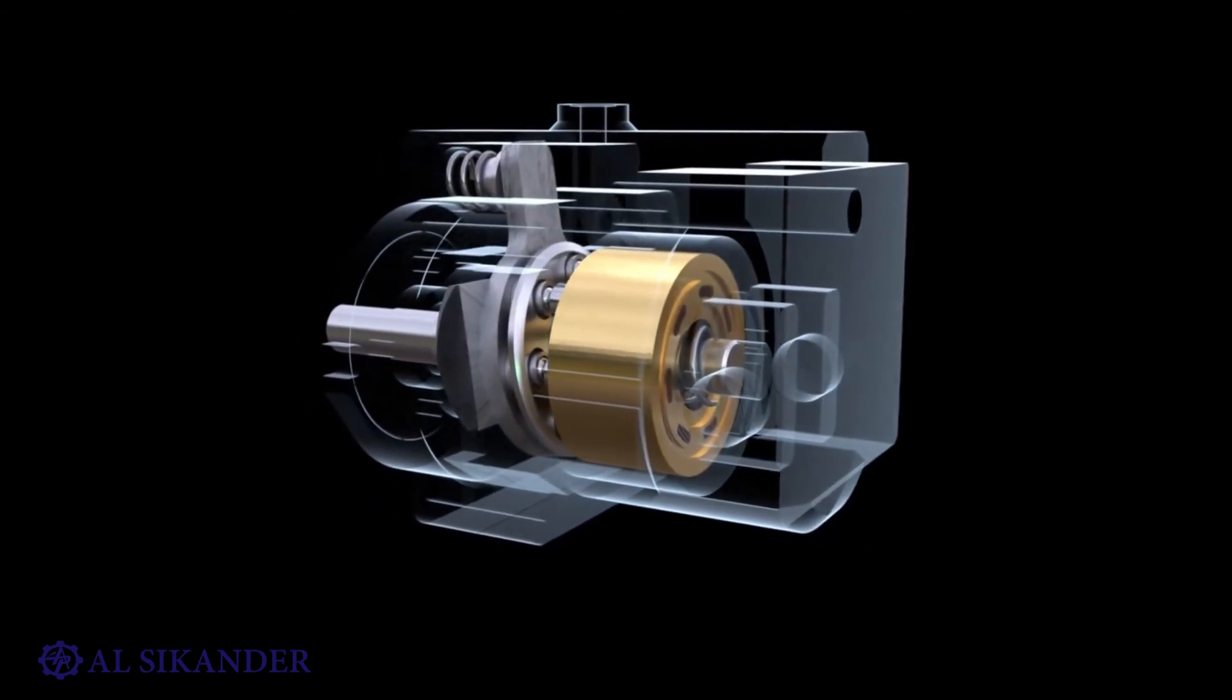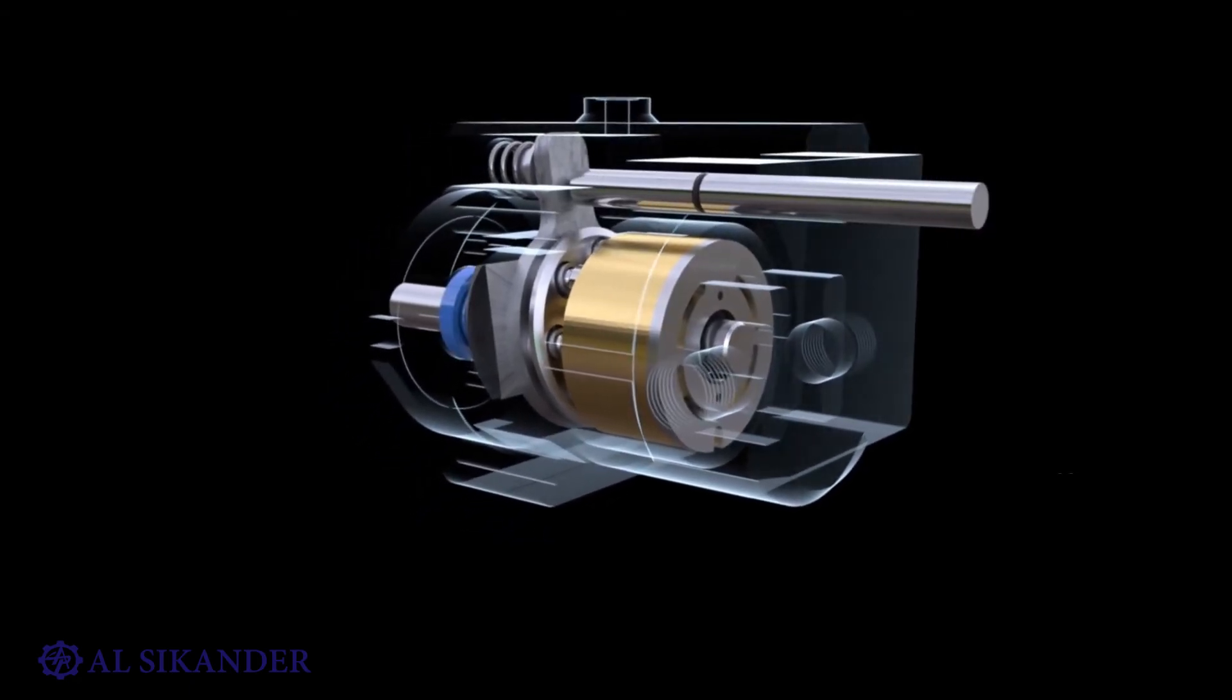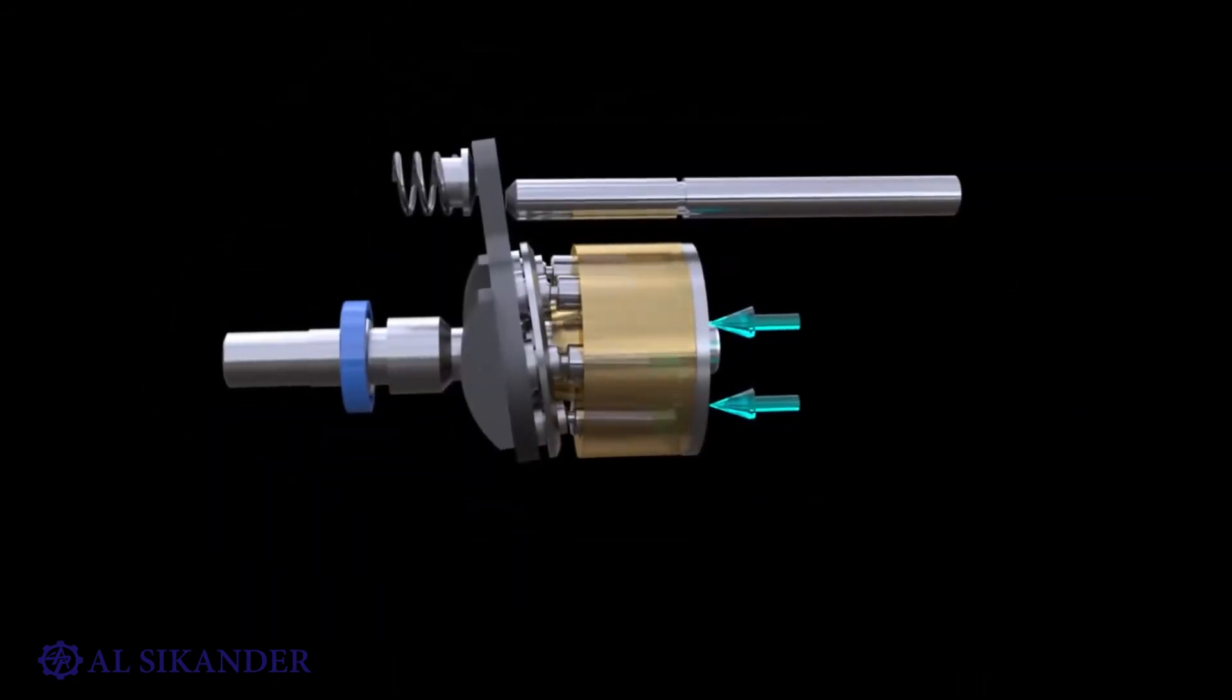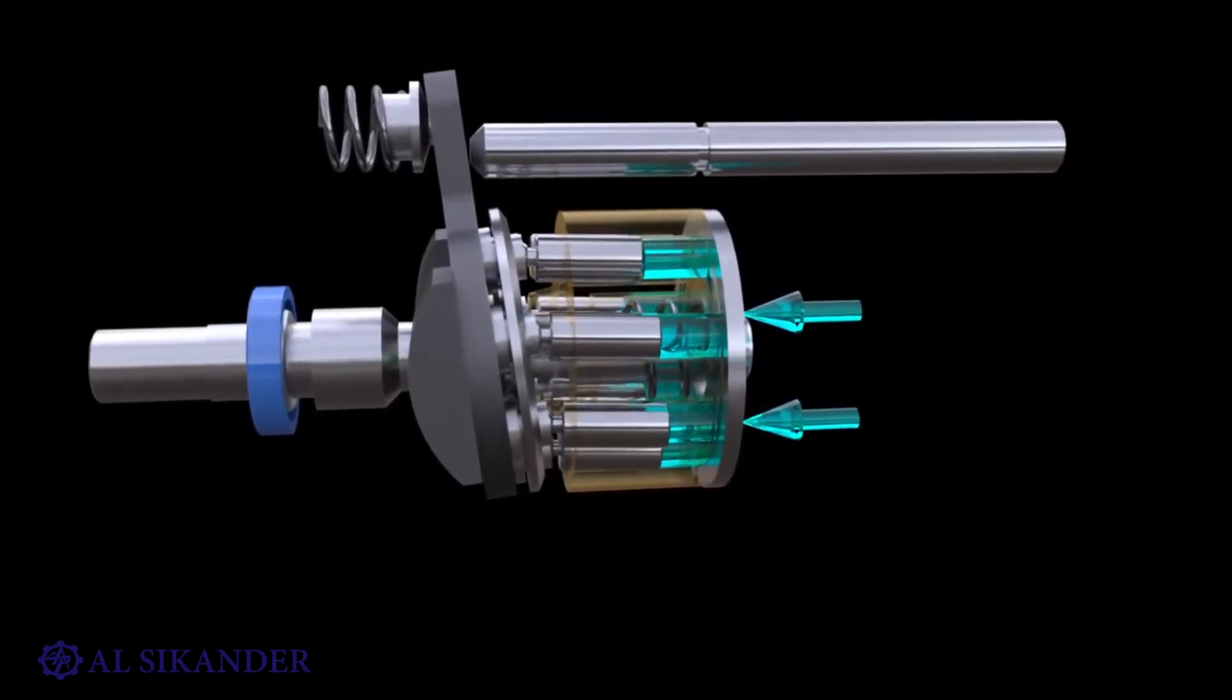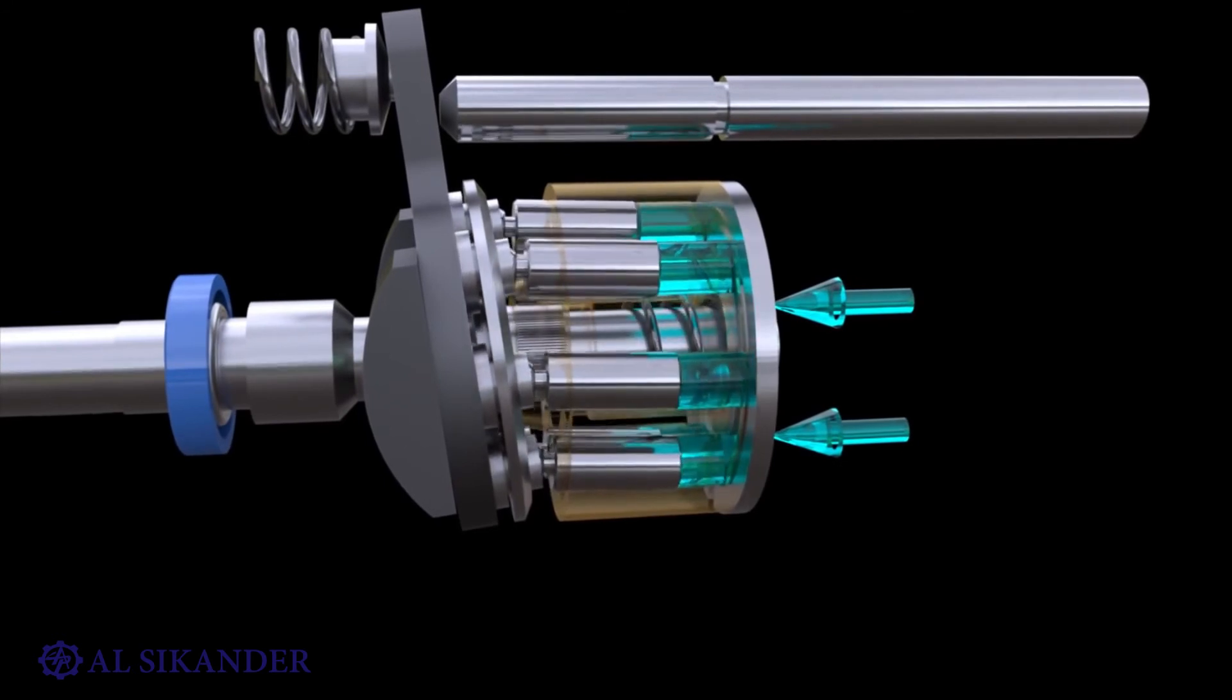The pistons are supported on the disc by special shoes or spherical pushers. The cylinder block is mounted on a distributor disc with a rear cover in which channels are made for connection to the pressure and suction lines. The working process of a pump with a tilting disc is similar to that of a pump with a tilting block.